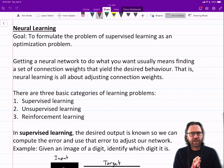So getting a neural network to do what you want usually means finding a set of connection weights that yield the desired behavior. That is, neural learning is all about adjusting connection weights and biases.